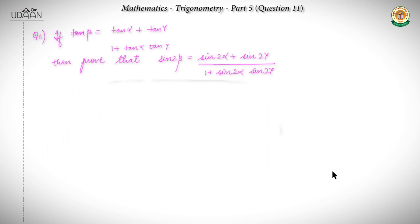We have question 11 over here, which says: if tan β equals tan α plus tan γ divided by 1 plus tan α times tan γ, then prove that sin 2β equals sin 2α plus sin 2γ, whole divided by 1 plus sin 2α times sin 2γ. The form we have to prove is quite similar to the given form, so we need to find our approach.